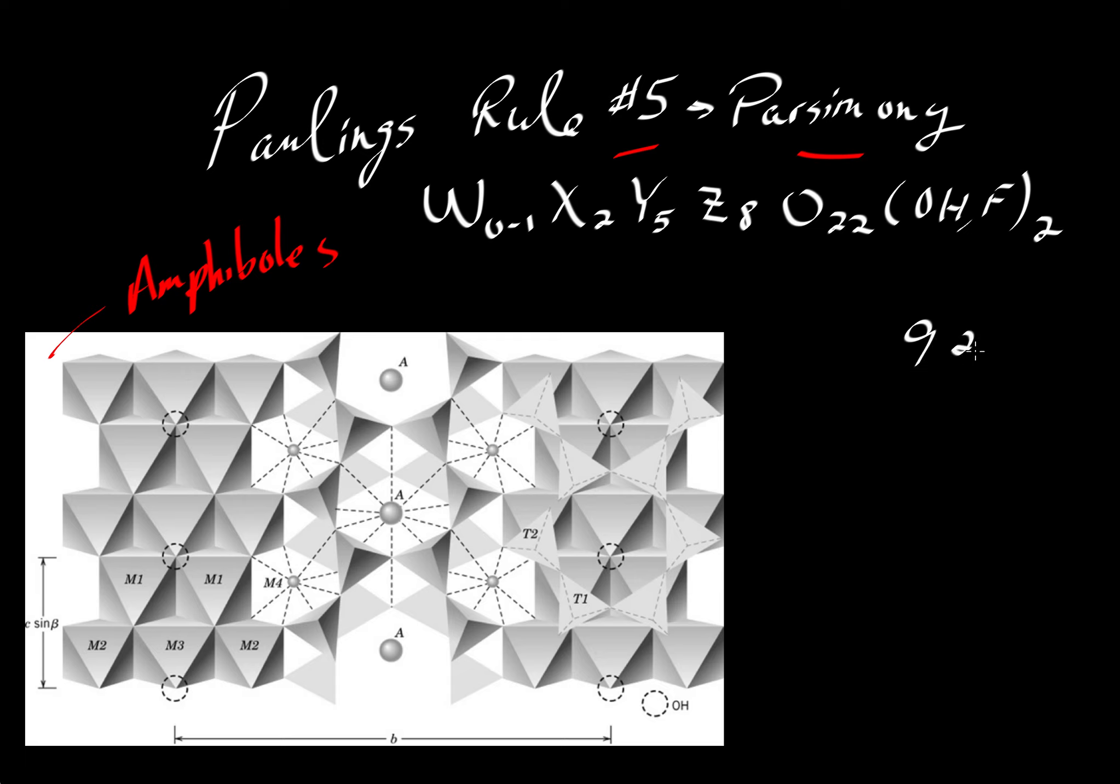And of the 92 naturally occurring elements, a very large fraction of them can fit somewhere into this formula. But think about this. If we can put, let's say, 80 of the 92 elements easily into one of these various sites, how is it that we get this rather simple formula? And this is certainly more complex than something like SiO2 or CaCO3, but there are a lot of different ways that we can arrange 60, 70, 80 different elements. And yet we write this very simple formula.